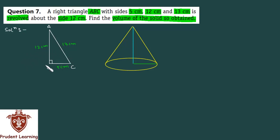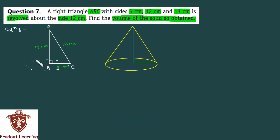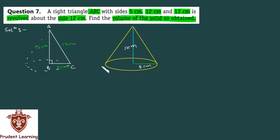As the triangle revolves about the 12 cm side, it traces out a cone shape. The side about which you revolve becomes the height of the cone. So this cone has a height of 12 cm, a base radius of 5 cm, and a slant height of 13 cm.